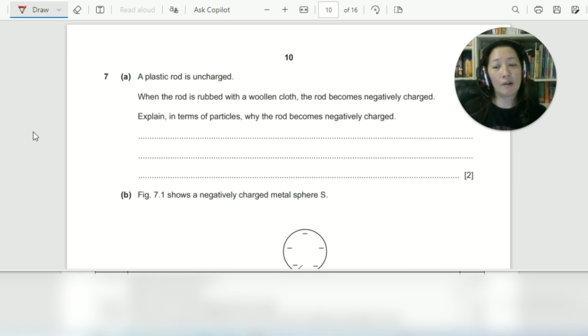So this particular question is from the concept of static electricity, because as you can see, they've talked about how the rod is rubbed with the woolen cloth. So the rubbing of the rod with the cloth will cause the charges to move. And then once they've moved, they become stationary, which is the static electricity.